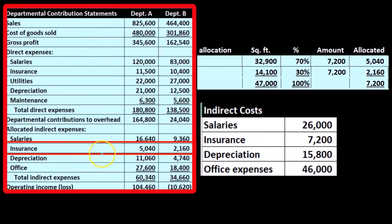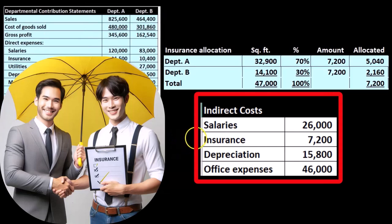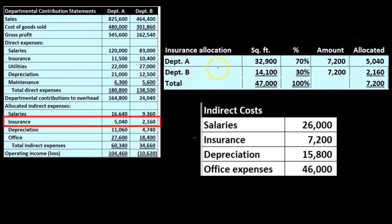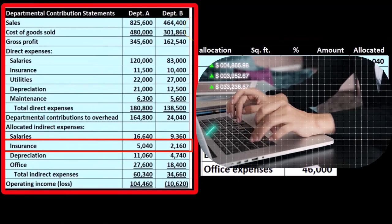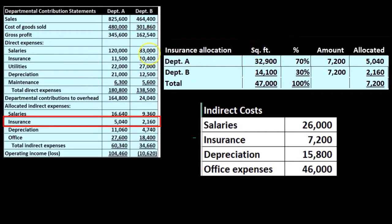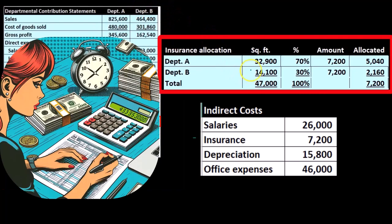Now we're going to do the same thing for insurance, using a different activity base. For insurance, we have Department A and Department B, and instead of using sales, we're going to use square footage. Department A is taking up 32,900 square feet and Department B is 14,100 square feet, adding up to 47,000 total.